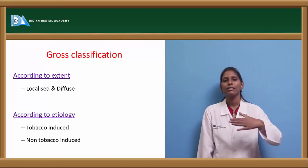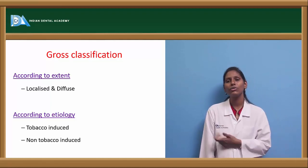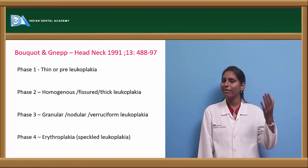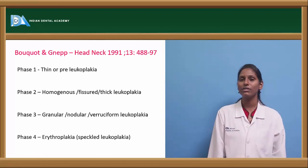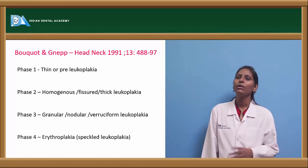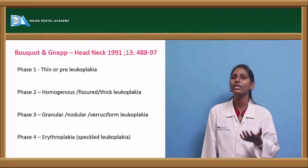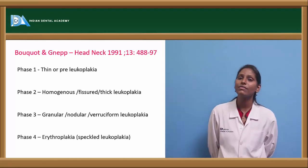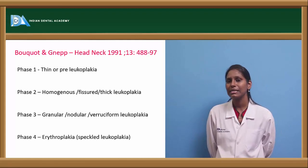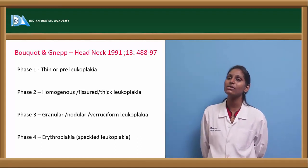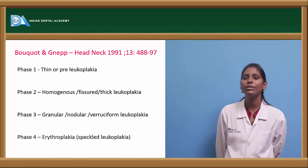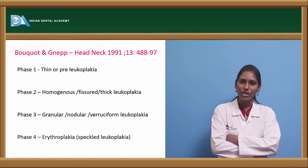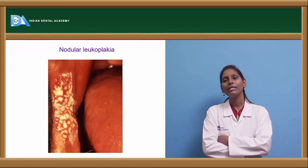Coming to gross classification: based upon the extent of the lesion, it is divided into diffuse or localized. According to etiology, tobacco-associated and non-tobacco-associated. Based upon the classification given by Bokeh and NEP, it is divided into four phases: Phase one is pre-leukoplakia — a thin leukoplakia with diffuse edges. Phase two is homogeneous leukoplakia — fissured or thick leukoplakia. Phase three is nodular or verrucous-form leukoplakia. Phase four is erythroplakia — a red lesion which cannot be classified either clinically or histopathologically like any other red lesion.